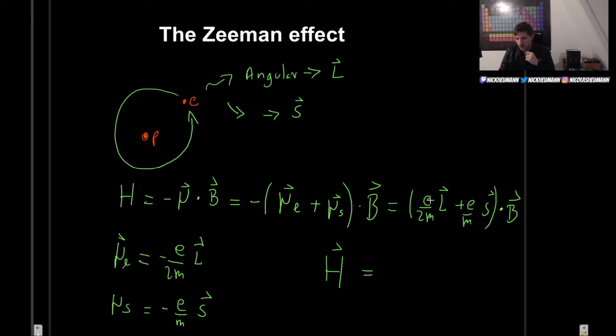So the Hamiltonian will be, we can factor out E over 2m. So E over 2m, we factor it out and we get L plus, and here we have to multiply by 2. So the point of this is that if we multiply everything inside, we have to get the same that we had before. And if we were to just multiply, we would get something here divided by 2. So we have to multiply by 2 so that we are not doing anything illegal. So this would be L plus 2S dot the magnetic field. So this is the Hamiltonian for the Zeeman effect. So this is very important that you write it down because we will constantly refer back to this.